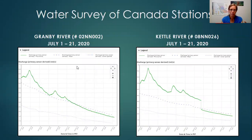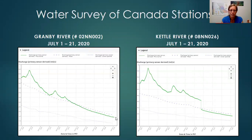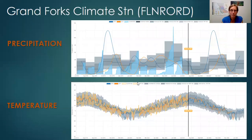I've pulled two discharge readings from systems we know fairly well here in the Boundary Region. The Granby River at Grand Forks — from July 1st to the 21st — shows we were above average for quite a while but are now just starting to drop slightly below average. With these hot temperatures and low precipitation, this is something I'm really starting to watch closely. The Kettle River at Westbridge shows a similar story — the jogs in the data indicate they've had to re-gauge their discharge readings based on water level — and we're also just starting to get below average for this time of year.